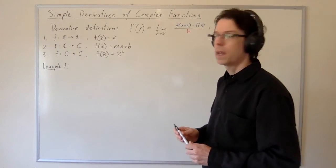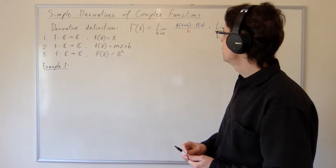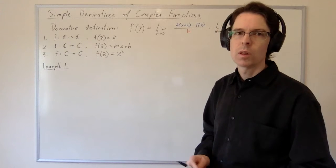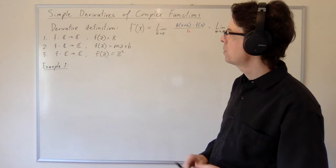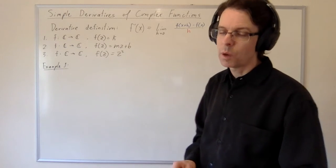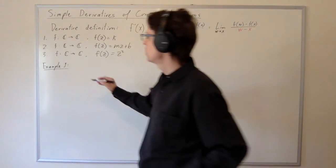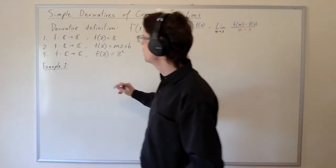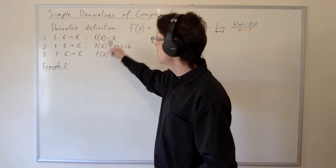Do simple derivative problems work the same if we're dealing with complex functions as they do in Calc 1? More or less. We're going to do three simple examples here and show that the derivatives all work out just the same way we expect them to from previous intuition from the real numbers. So the first example is a complex function which is just constant.